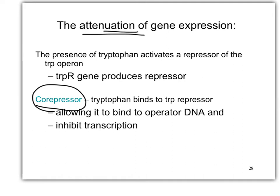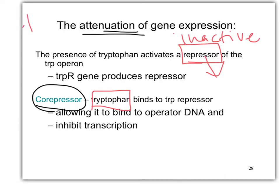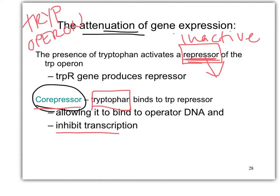What does that mean? That's something that attaches to a repressor and allows it to repress. So it's an inactive repressor that's sitting around, and it requires another molecule — in this case, tryptophan — because we're talking about the trp operon in this very little short. And we're talking about the repressor being co-repressed to inhibit transcription.